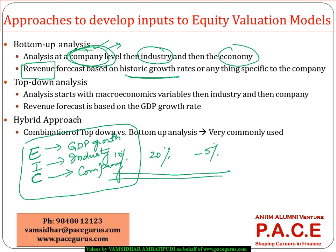When a company uses both bottom-up and top-down as part of the forecasting process, we call that a hybrid model. These are the ones most comfortably used in the industry because it helps us validate one approach with the help of the other.